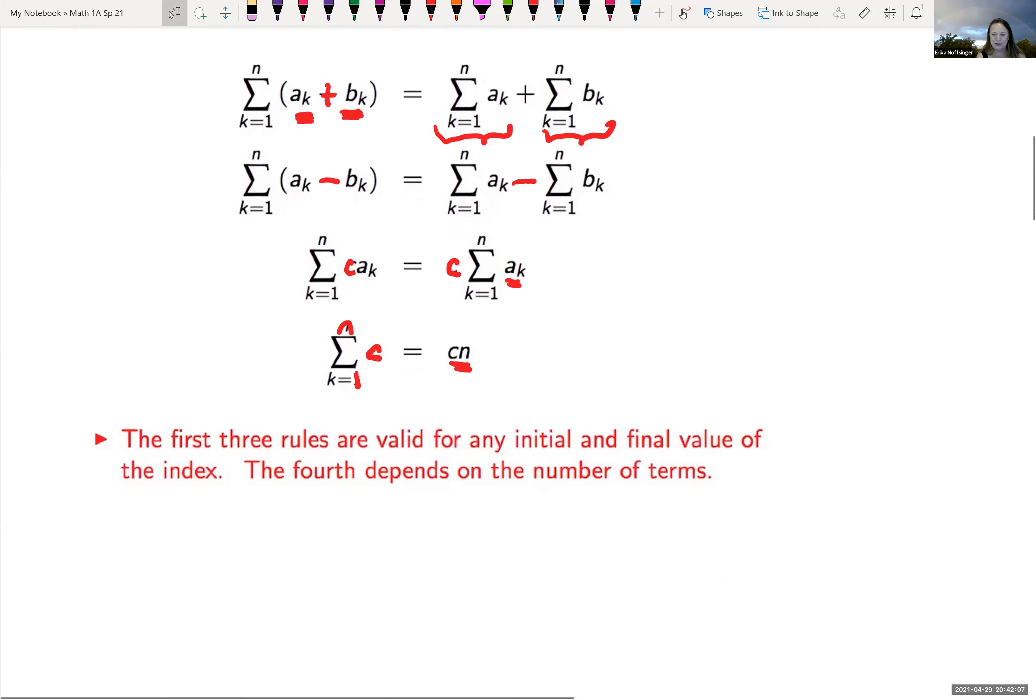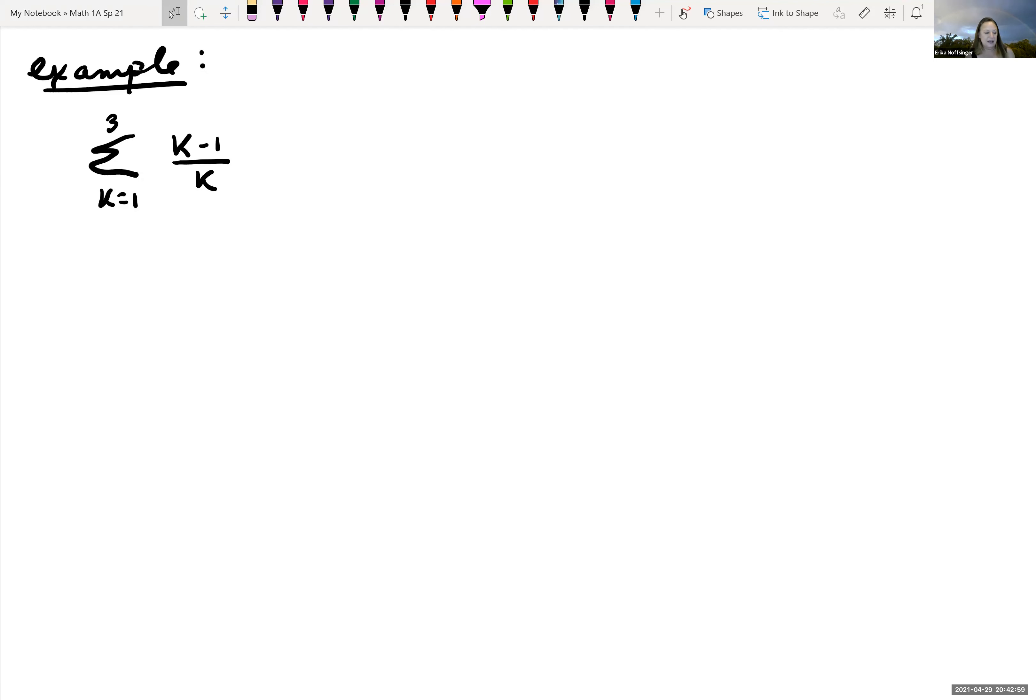Okay, so now let's look at an example of using summations. So our example is a summation from k equals one to three. Our function is k minus one over k. And so basically our value a sub k, we can define it again as k minus one over k. And so what we're trying to do is find what a sub one is, sum it to a sub two and sum it to a sub three. So whatever we see a K, we're going to plug in what our index is. And so a sub one, this is equal to one minus one all over one. Well, zero over one is zero.